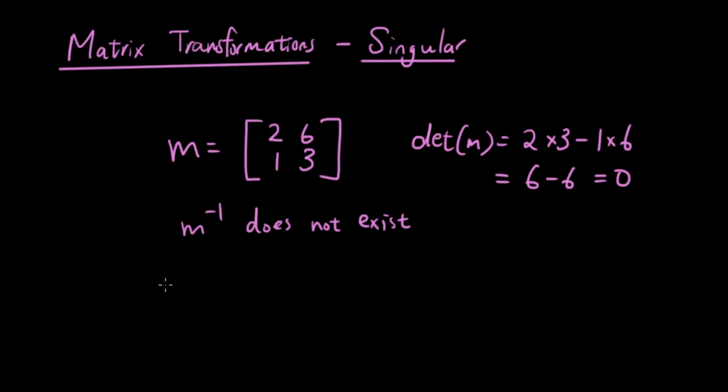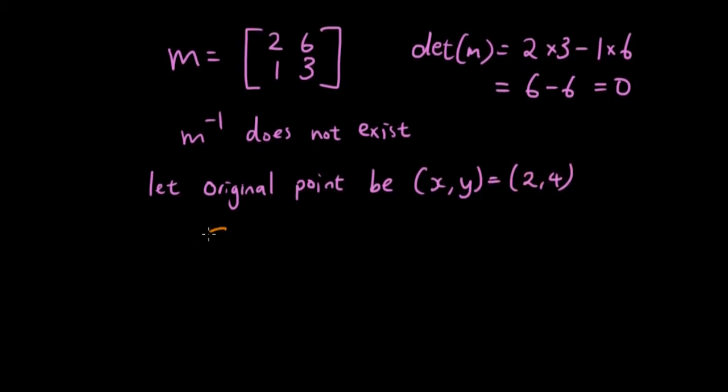So for example, let the original point be x and y, which is 2 and 4. If you transform it using this matrix, you will get 2 times 2 is 4, 6 times 4 is 24, so the answer is 28.